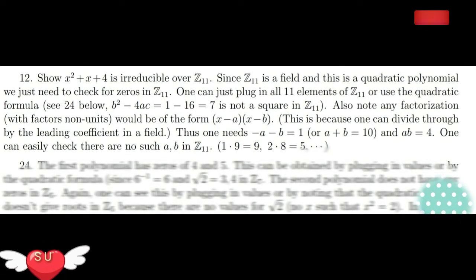In this video, how do we get irreducible over Z₁₁? Suppose we get x² plus x plus 4. That is Z₁₁, that is the field.